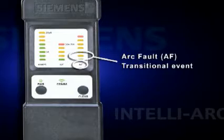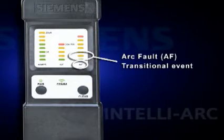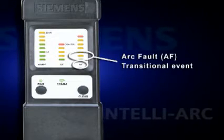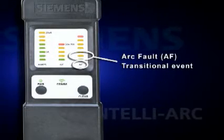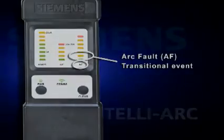Transitional events — for example, turning on an appliance — are likely to register as some low level on the arc fault scale.